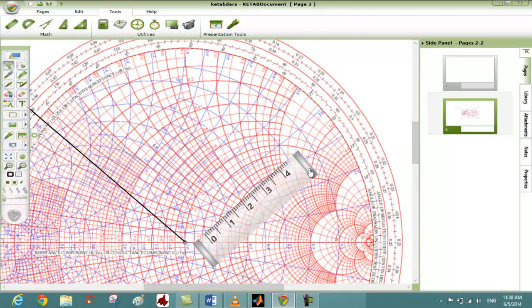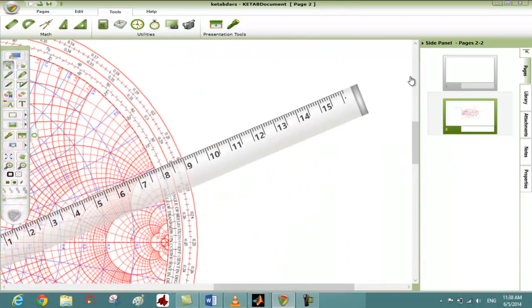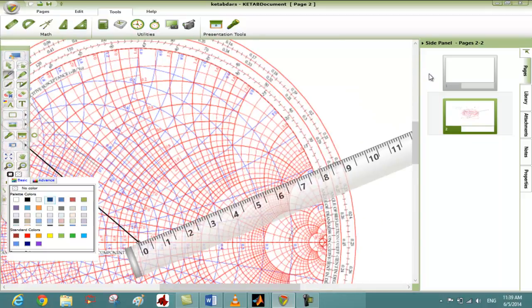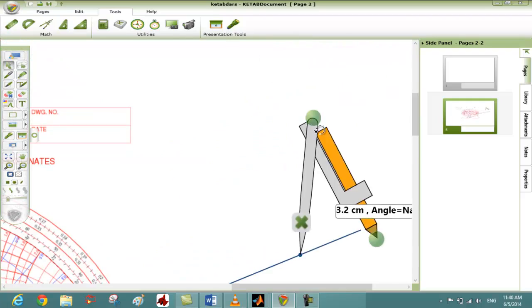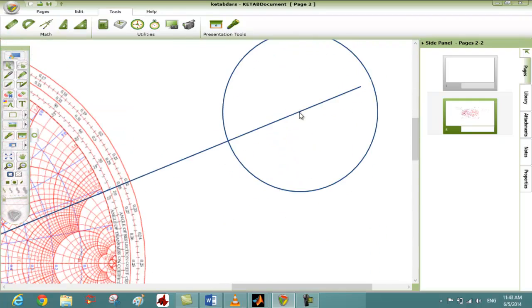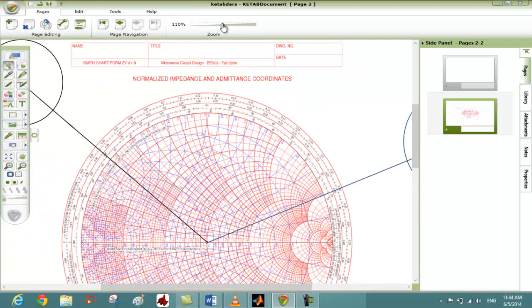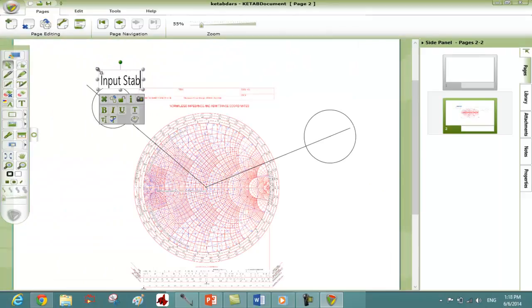Then for the output stability circles we have the same steps. So we found values at the load, we applied them the same way we applied to the input stability circle, and then you solved the whole question.